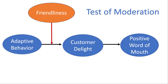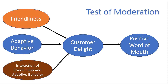Typically in these situations, you'll have the IV — in this case adaptive behavior — having a direct relationship to its outcome variable, customer delight. Then you would have a direct effect from the moderator, which was friendliness, to delight. And then you would also create an interaction term, which is basically a product of friendliness times adaptive behavior, to really test if the relationship was being strengthened or weakened.